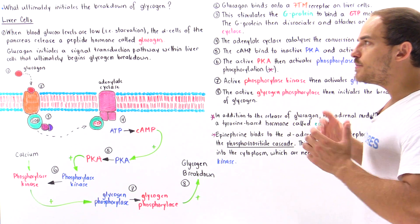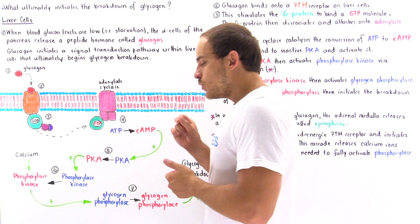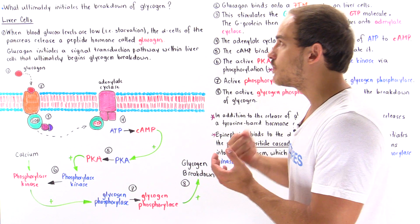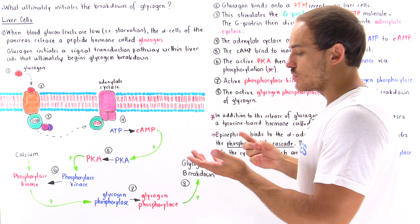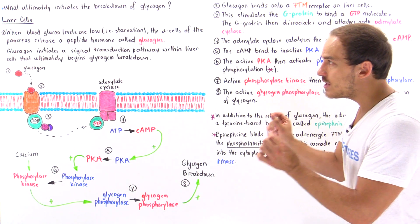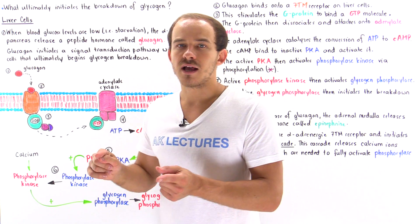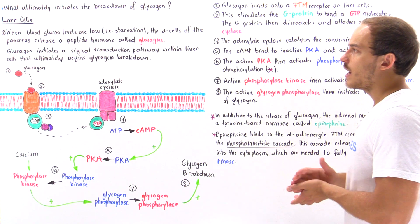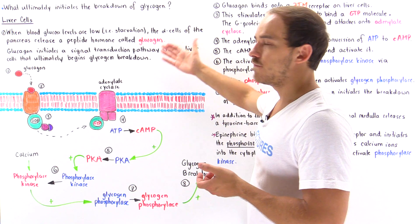Let's begin by focusing on liver cells. There are two important types of hormones that play a role in signaling the breakdown of glycogen in liver cells: glucagon and epinephrine. Glucagon plays a much greater role in liver cells than epinephrine, but in skeletal muscle cells it's epinephrine that actually initiates the breakdown of glycogen.